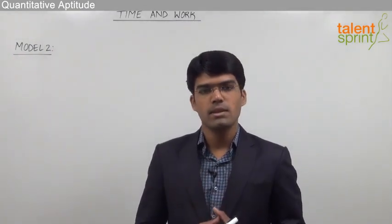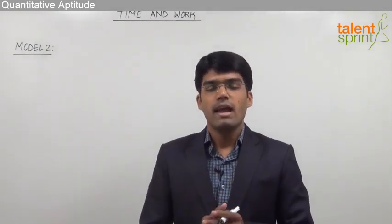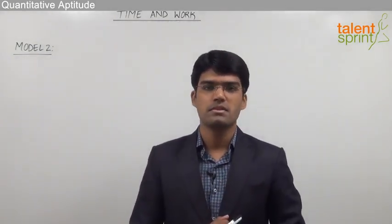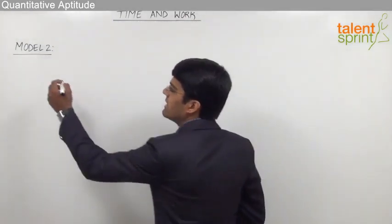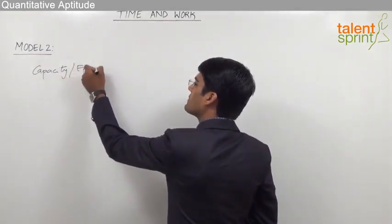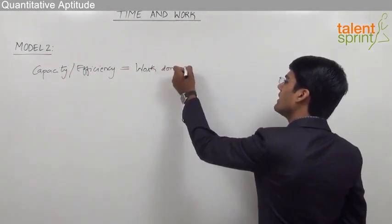Let us now discuss the second model from time and work, where we use the concept of work done in one day to solve the given questions. This is also known as the unitary method, where we are actually trying to find out the work done in a unit day or one day. Whenever we know the total work, total work divided by number of days gives us the work done in one day. This work done in one day can also be referred to as the capacity or efficiency of the person.